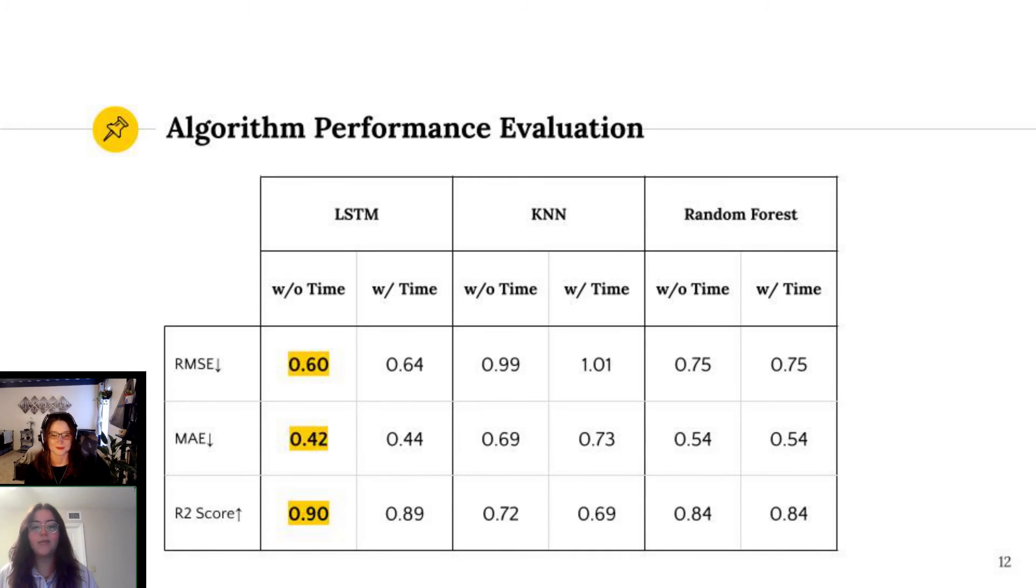We have highlighted the best scores for these metrics from the six models, and we can see that they all come from the LSTM model trained without time as an input, showing that this was our best performing model. If we take a closer look at the chart, we can see that LSTM with time as an input had the second best scores of these metrics. From this, we concluded that LSTM in general generated the most accurate predictions for temperature and humidity from the house.